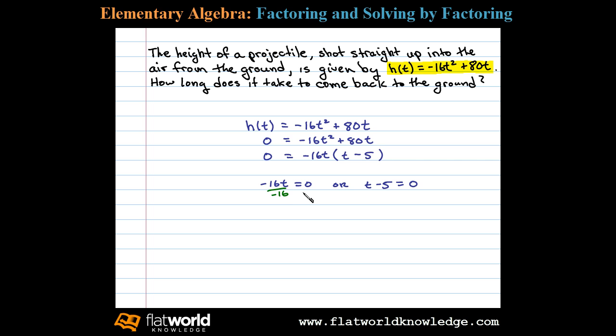We see that t could be equal to 0. Divided by negative 16 is 0. And here if we add 5 to both sides we're left with t equals 5.